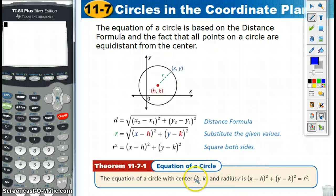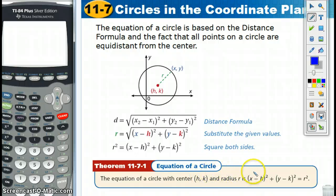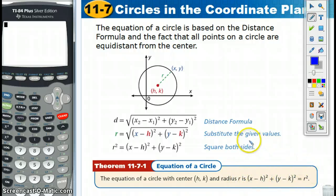So these are letters that you should memorize: h, k. H is the x coordinate of the center of the circle, and k is the y coordinate of the center of the circle, and the radius is r. Here's the formula — go ahead and memorize it. You will need to know this for quizzes and tests.